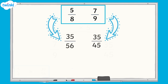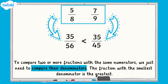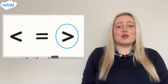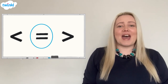Remember the rule: to compare two or more fractions with the same numerators, we just need to compare their denominators. The fraction with the smallest denominator is the greatest. Therefore, thirty-five forty-fifths is the greatest as it has the smallest denominator. We would say that five eighths is less than seven ninths. We can use the greater than, less than, or is equal to symbols to compare fractions.